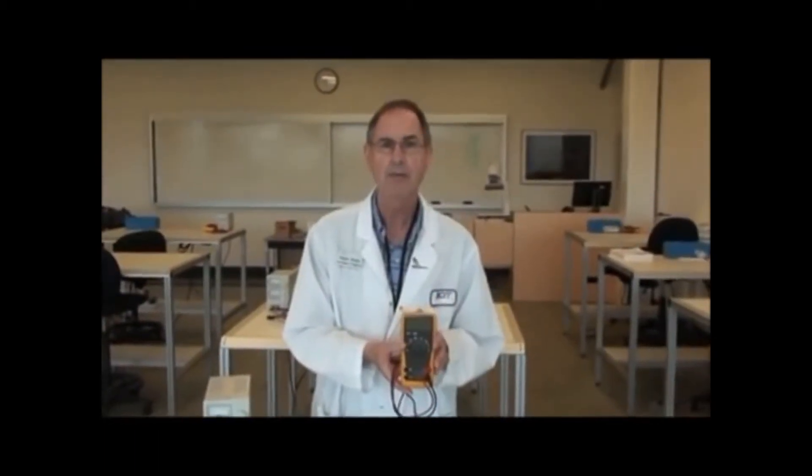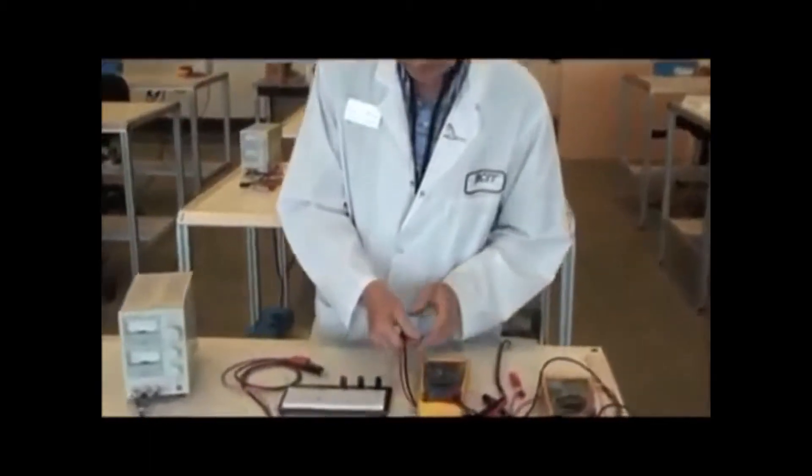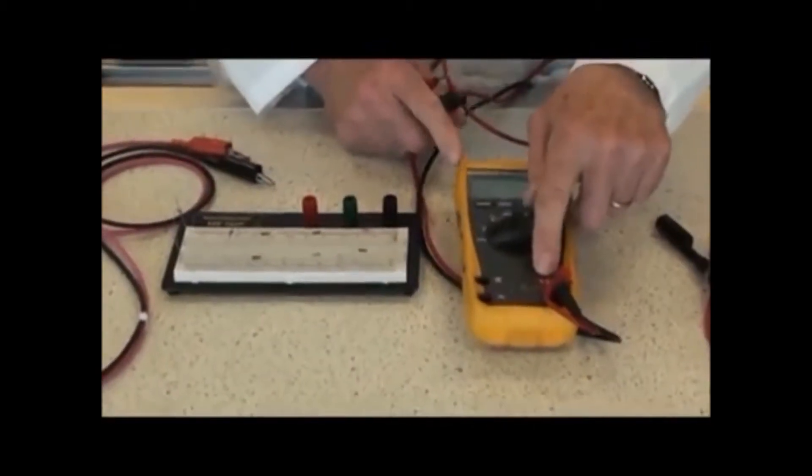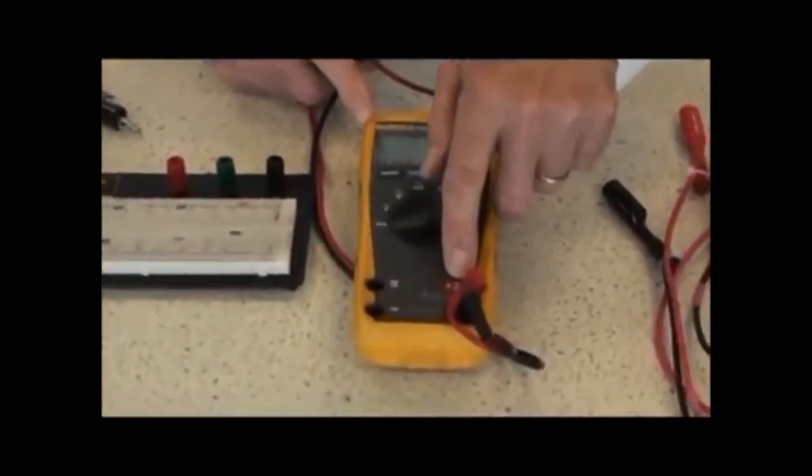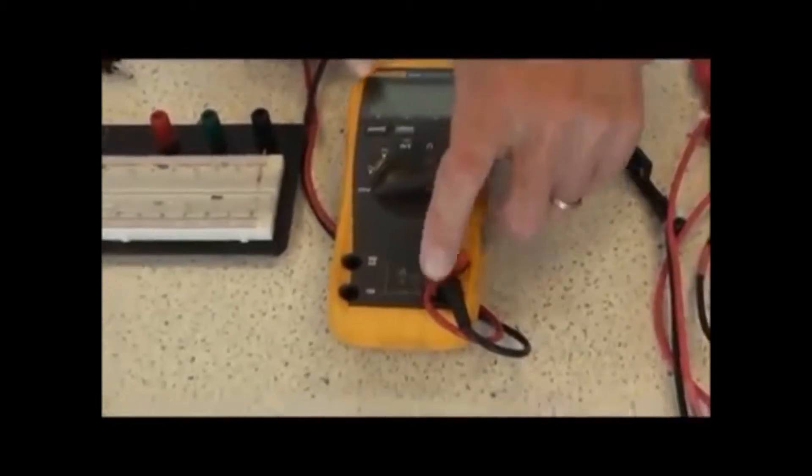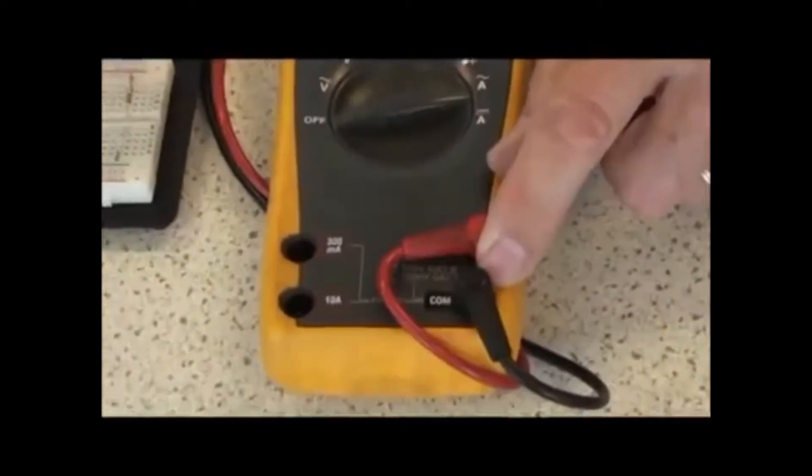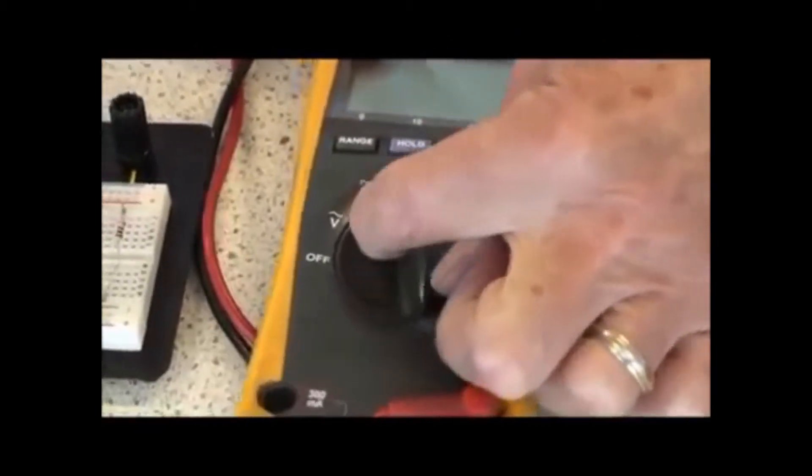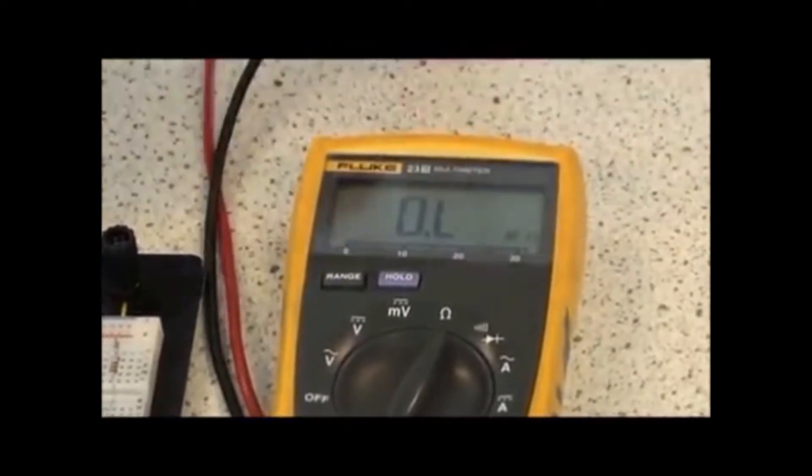I'd like to first start with the measurement of resistance. Resistance is measured by using this meter, making sure that the red lead is connected to the volts and ohms terminal, and the black lead is connected to the common terminal. First, you select over to ohms, omega, here, and the meter will automatically turn on.